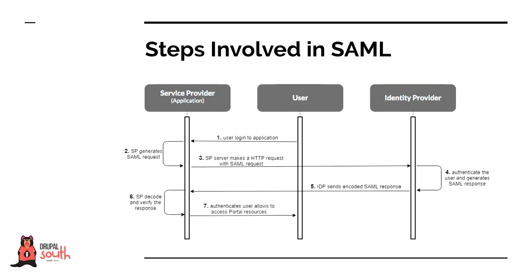The service provider consumes that response, creates a session, and gives access to users for accessing the HR system. These are the steps involved in the SAML environment: first, the user sends a request to login; the service provider creates a SAML request and sends it as an HTTP request to the identity provider; the IDP checks the source, authenticates against LDAP or database, creates the SAML response, and sends it back; the service provider consumes the response, creates the session, and gives access to the user. There are seven steps involved.